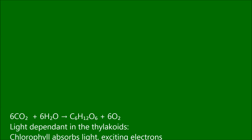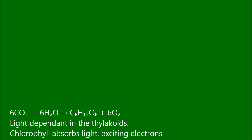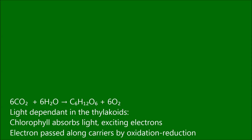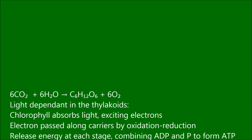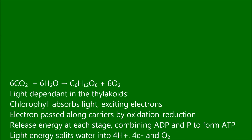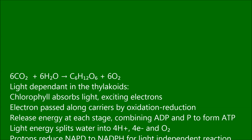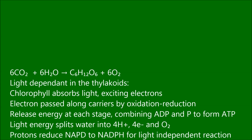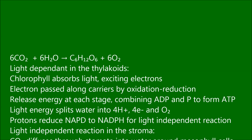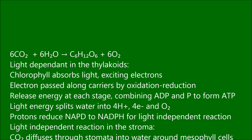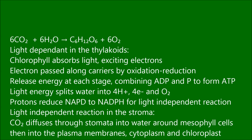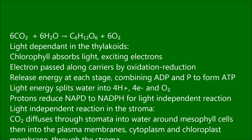Light dependent reactions in the thylakoids: chlorophyll absorbs light, exciting electrons. Electrons pass to electron carriers by oxidation reduction, releasing energy at each stage, combining ADP and P to form ATP. Light energy splits water into 4 hydrogens, 4 electrons, and O2. Protons reduce NADP to NADPH for the light independent reaction.